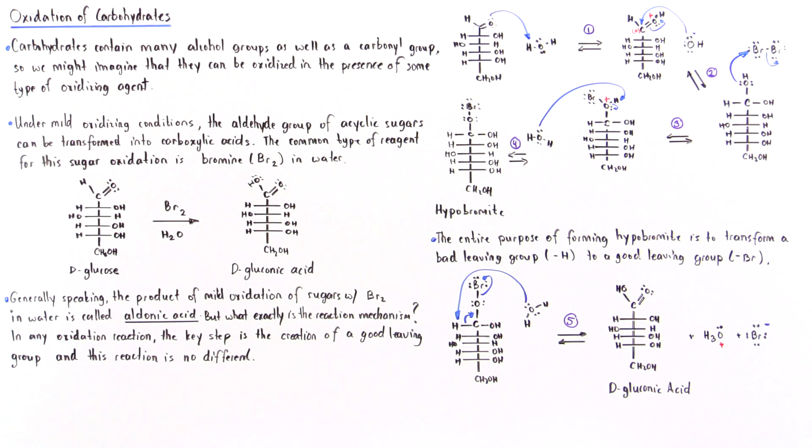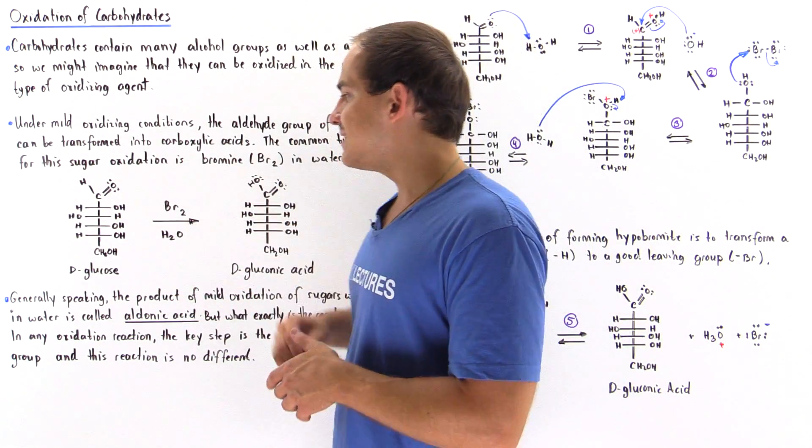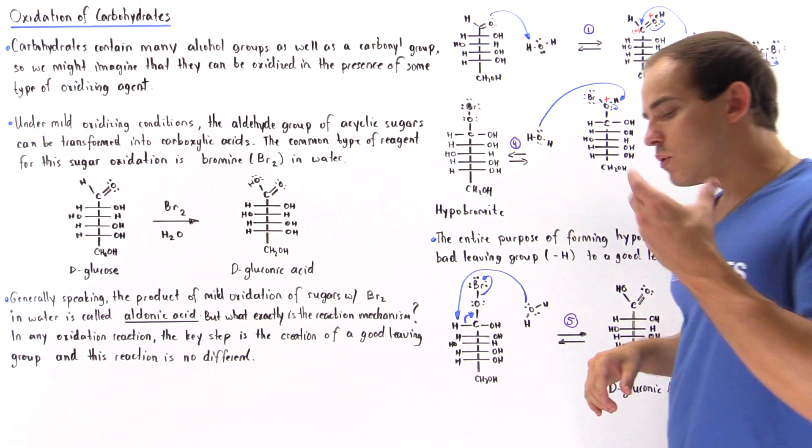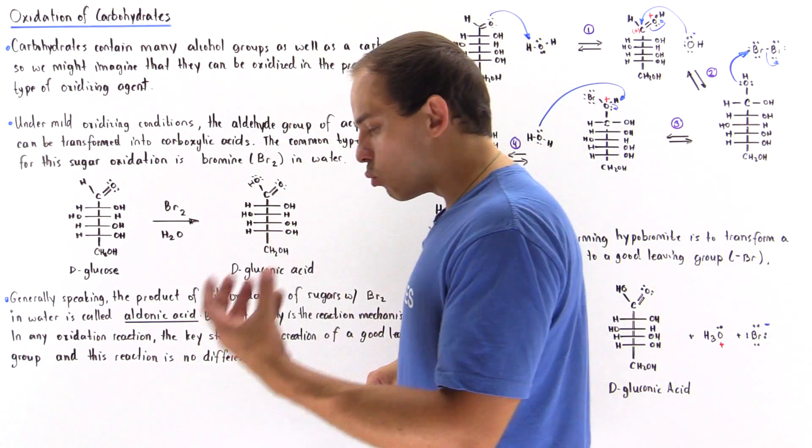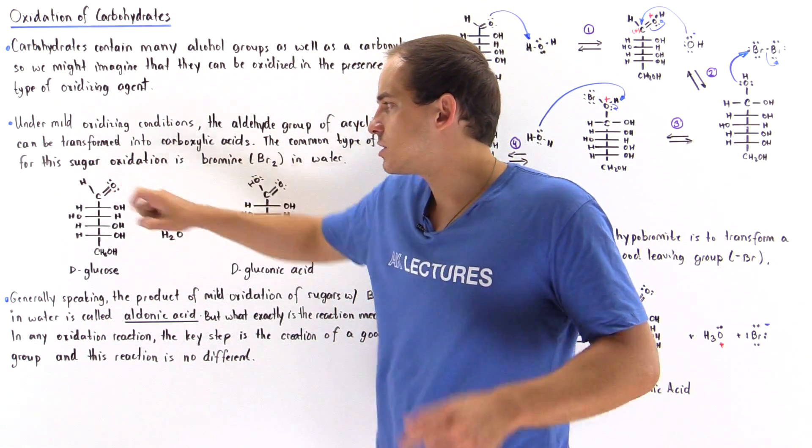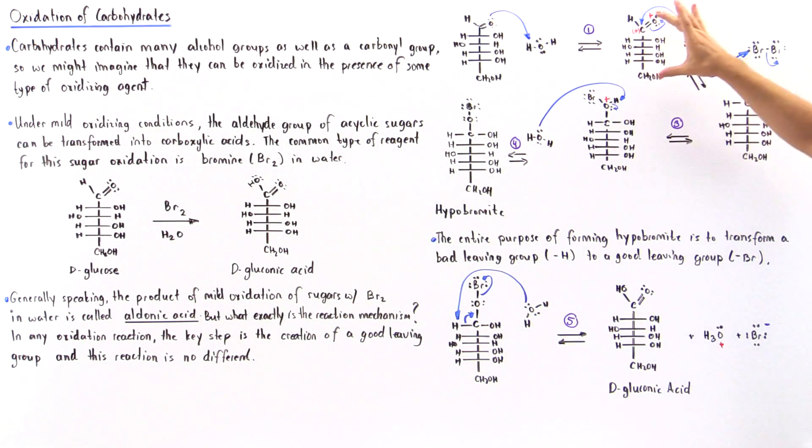To see what we mean, let's take a look at our reaction mechanism. Let's begin with our open chain acyclic D-glucose. We mix it with water, and the water basically acts to protonate this oxygen to form a resonance stabilized intermediate.